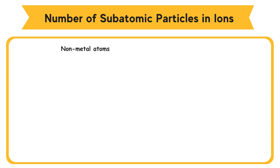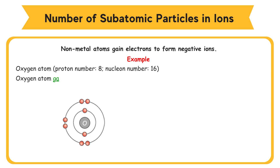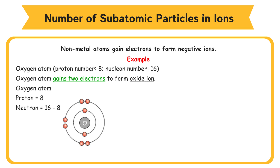Non-metal atoms gain electrons to form negative ions. For example, an oxygen atom with proton number 8 and nucleon number 16 gains 2 electrons to form an oxide ion. In the oxygen atom: protons = 8, neutrons = 16 − 8 = 8, electrons = 8.